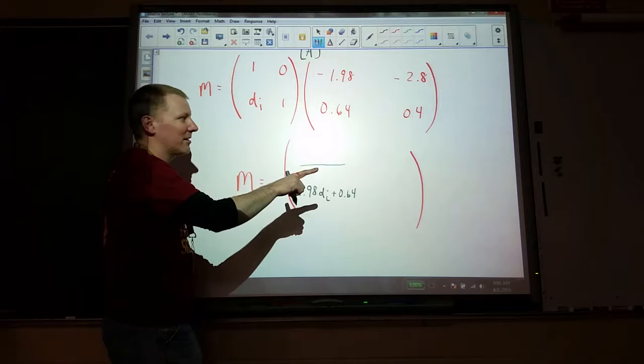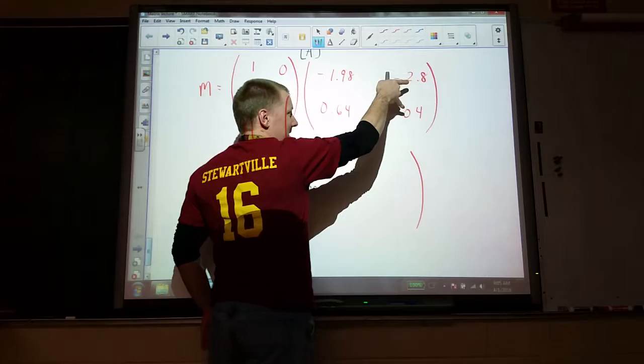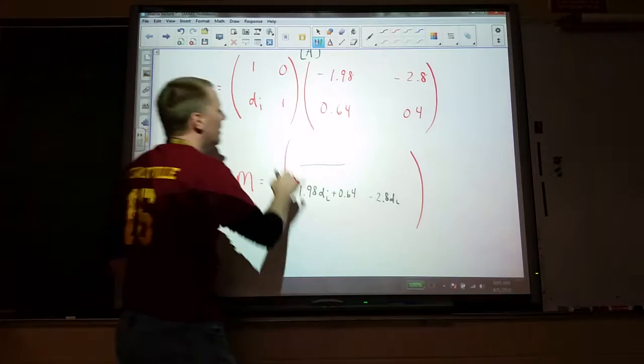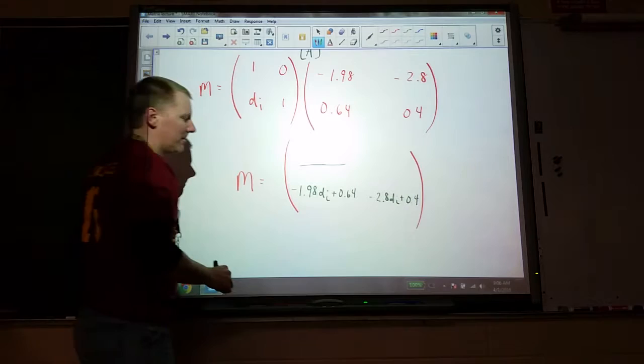When I want the lower right, which will help me find magnification, I take the lower of my first, and multiply it by the two on the right of the second matrix, and then add them together. So that'd be negative 2.8 times the DI, plus 1 times 0.4.